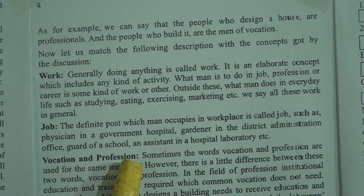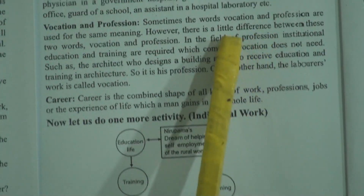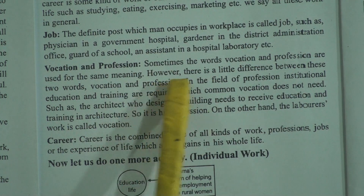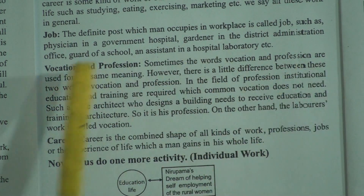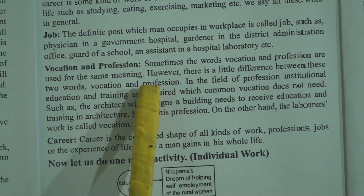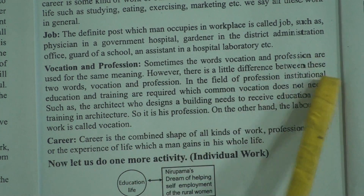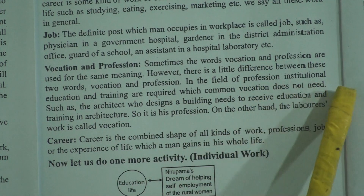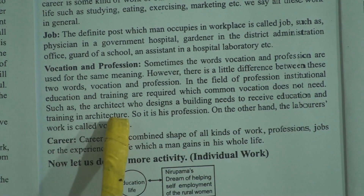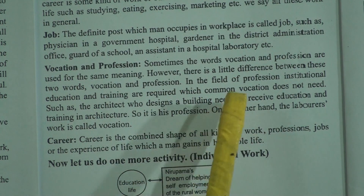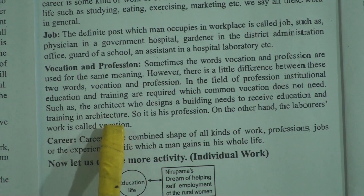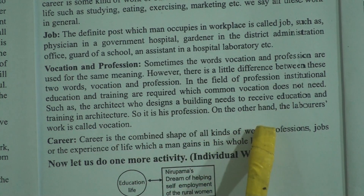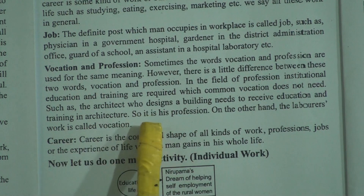Vocation and Profession: sometimes the words vocation and profession are used for the same meaning. However, there is a little difference between these two words. In the field of profession, institutional education and training are required, which common vocation does not need. For example, the architect who designs a building needs to receive education and training in architecture, so it is his profession. On the other hand, the laborer's work is called vocation.